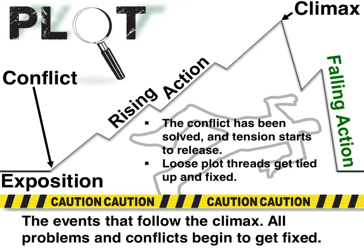And then we have the falling action. These are all the events that are going to follow the climax, and this is where all of our problems are going to be resolved. We're going to start seeing actions and decisions made by our main characters that are going to bring us some solution. Everything that the author has built up is going to begin wrapping up. This is where the author is going to share all the information we need so he can begin closing up the story, giving us closure as we wrap up our novel, short story, or reading passage.